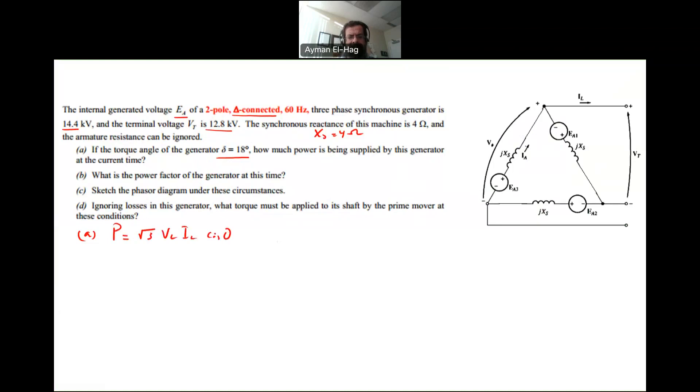There is the general formula of the power: P equals root 3 V line I line cosine theta. But also, there is another formula special for a generator when we are ignoring its armature resistance: P equals 3 times Vt times EA divided by Xs sine delta. And delta actually is the angle between Vt and EA.